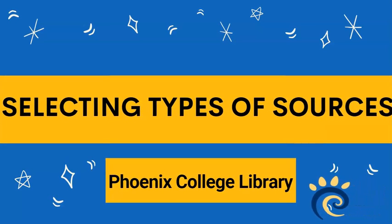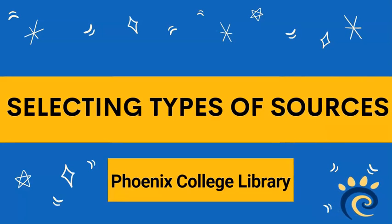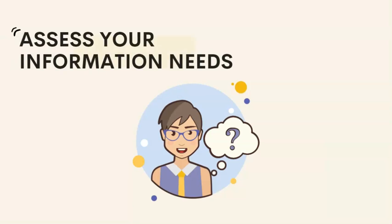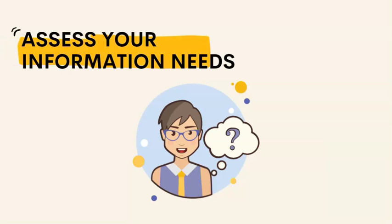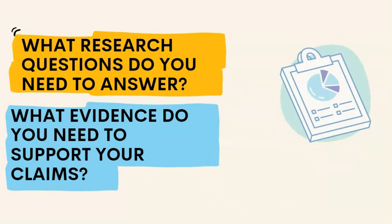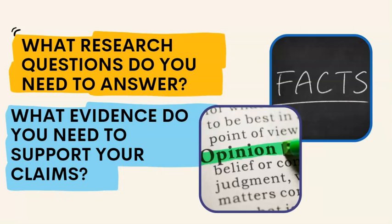Part of an effective research strategy is selecting the most appropriate types of sources for your information needs. The first step is to identify the information needs of your research project. Do you need general information or in-depth studies, background information, or just a current statistic? Are you interested in opinions and different perspectives or basic factual information? Assessing the information you need to answer your research questions and support your arguments will determine which sources to search.